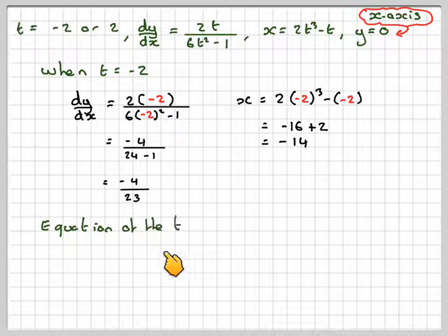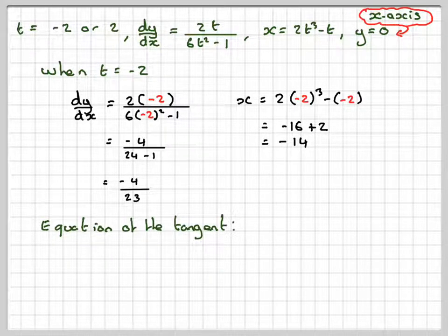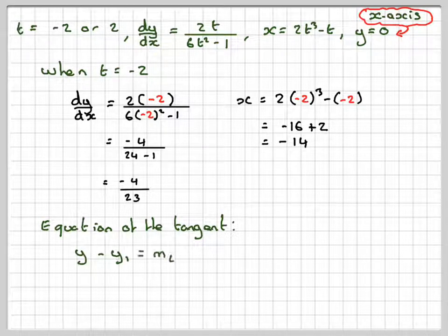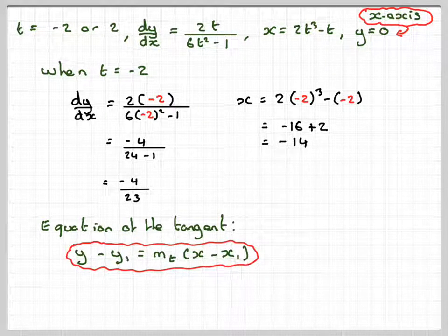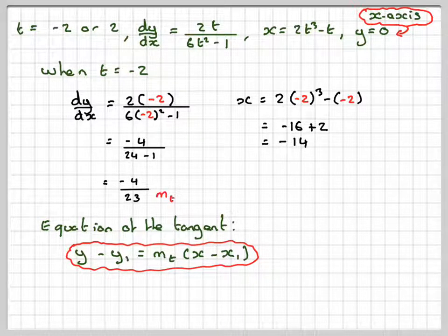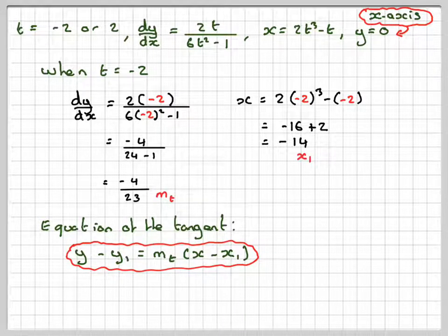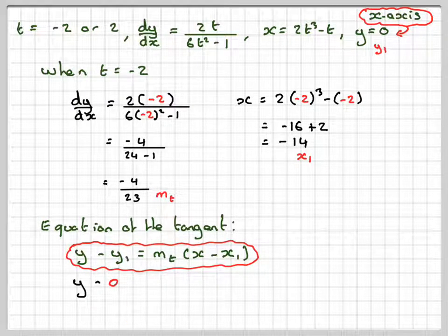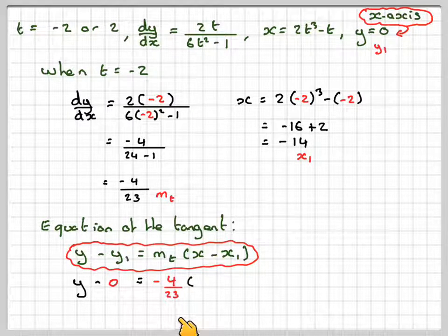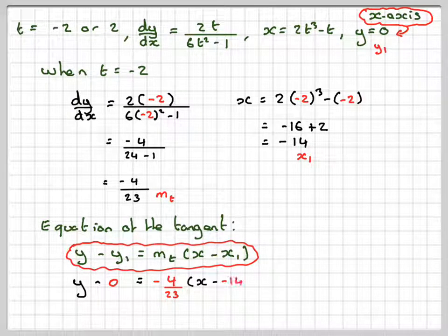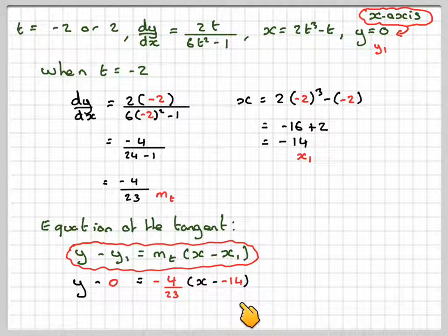Finding the equation of the tangent, you can use y equals mx plus c, but I prefer to use y minus y1 equals m(x minus x1). This will be m, this will be x1, and this will be y1. Substituting in, we get y minus 0 equals minus 4 over 23 times (x minus minus 14).